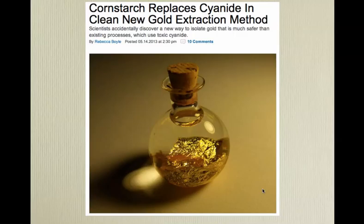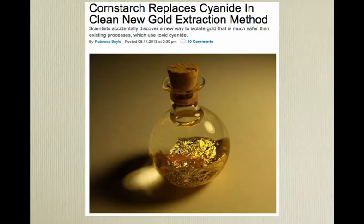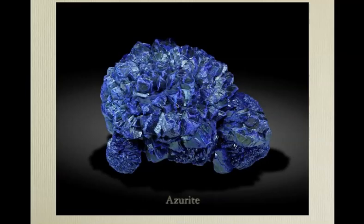Good news: we used to use cyanide to extract gold, but it looks like cornstarch can be used too. There's a place north of Cave Creek — an old gold mine where the guy was just dumping his old cyanide into Cave Creek, and people were drinking the water down below. Malachite is usually green again; azurite, blue.